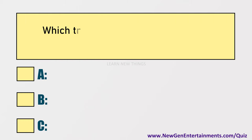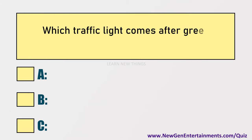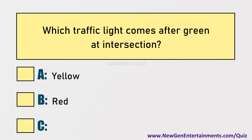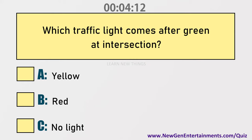Which traffic light comes after green at an intersection? Options are: A) Yellow, B) Red, C) No light. Answer: Option A, Yellow.